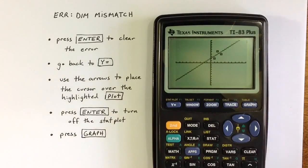we can see both the scatter plot, which is those three dots there, and the line together on the screen.